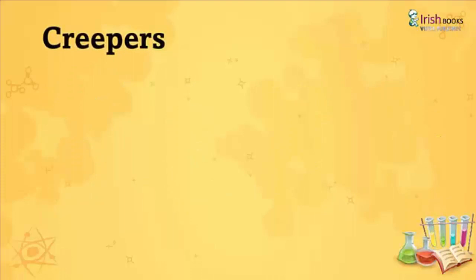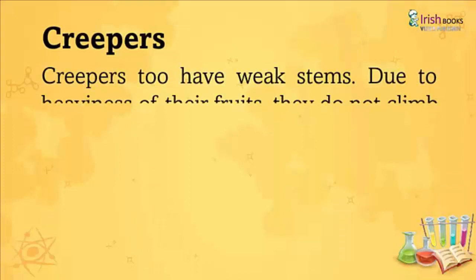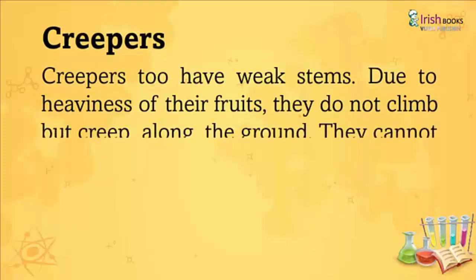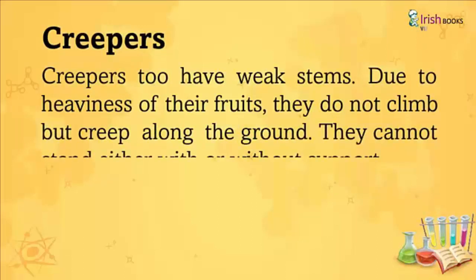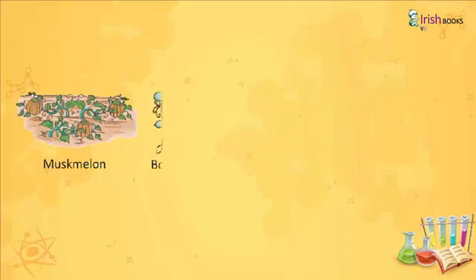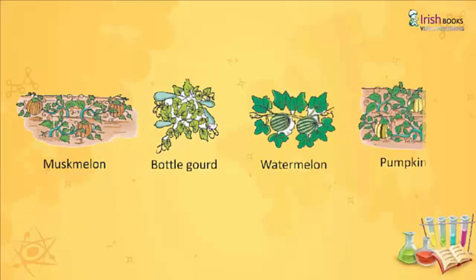Creepers: Creepers also have weak stems. Due to the heaviness of their fruits, they do not climb but creep along the ground. They cannot stand either with or without support. Examples include muskmelon, bottle gourd, watermelon and pumpkin.